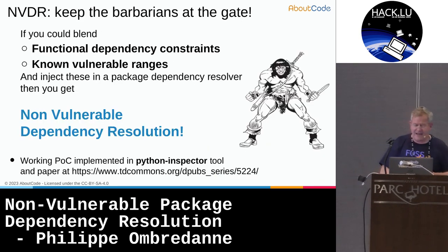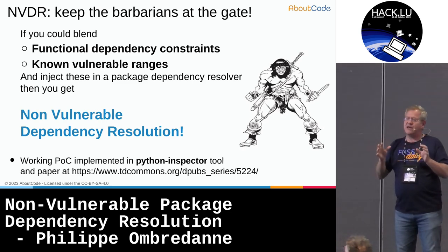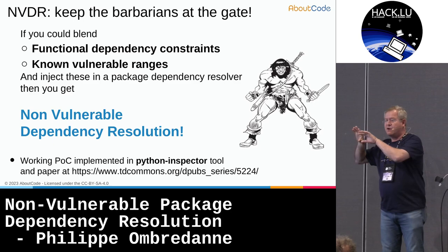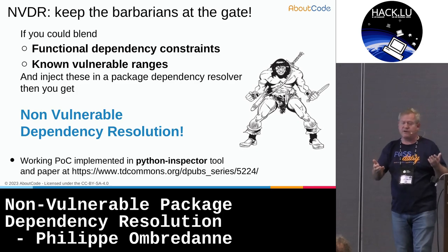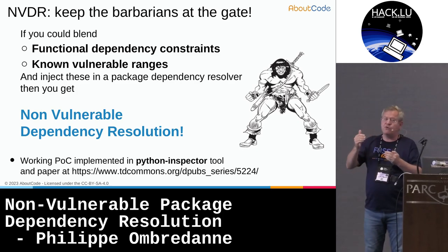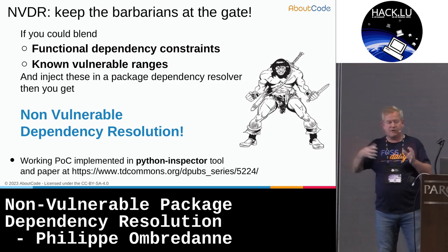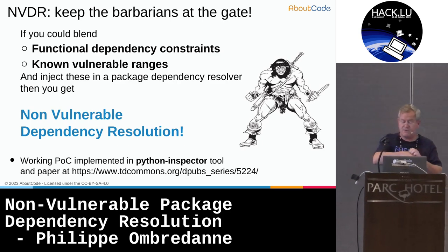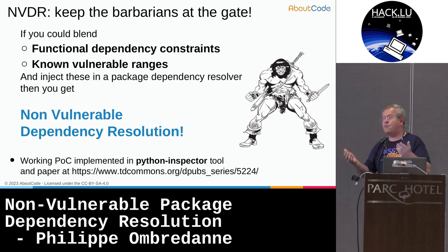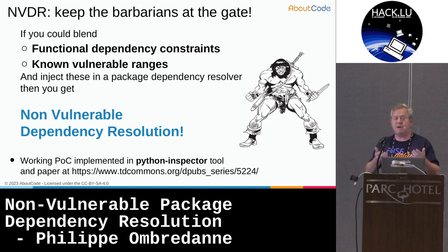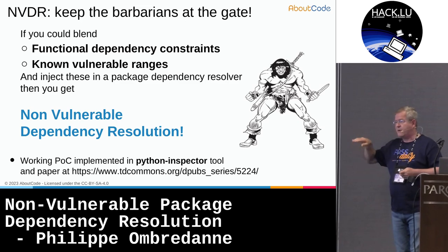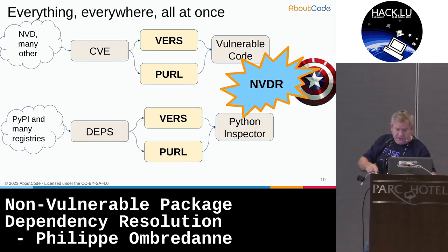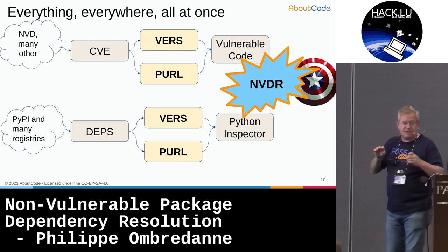Now, if you could blend together the constraints of functional dependencies expressed in your package management environment with the range of known vulnerable dependencies, and inject that into the dependency resolver, you eventually get something I hope will be standard in the future in any package management client: non-vulnerable dependency resolution. We've done a proof of concept using the python-inspector tool and the database we talked about.